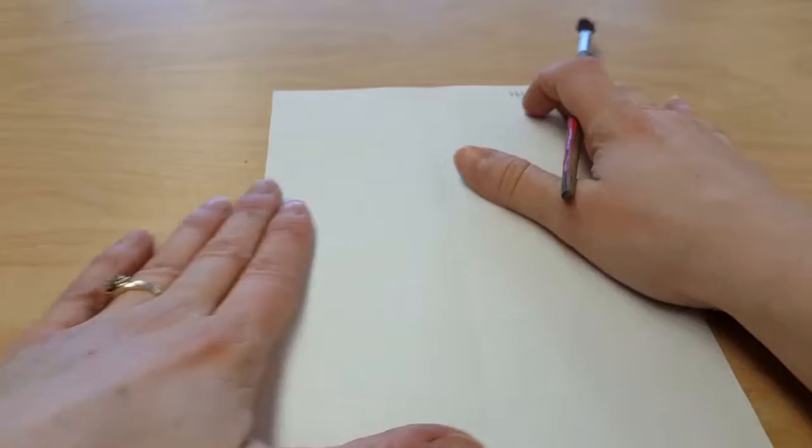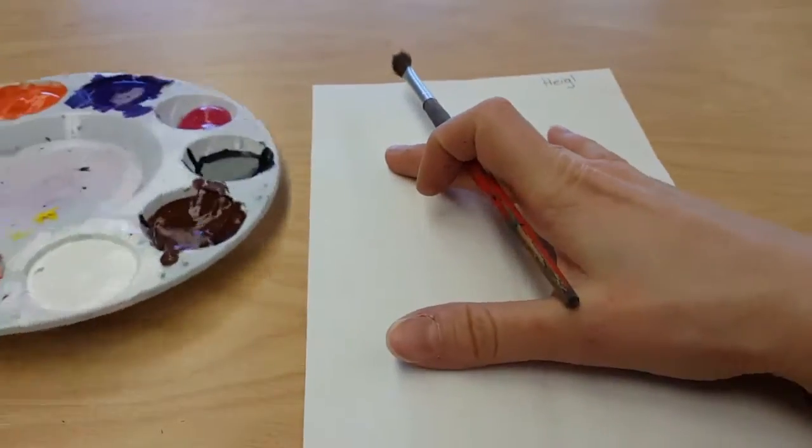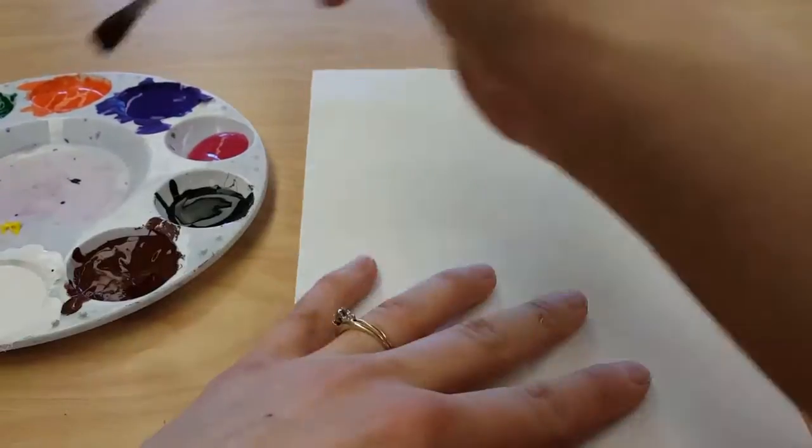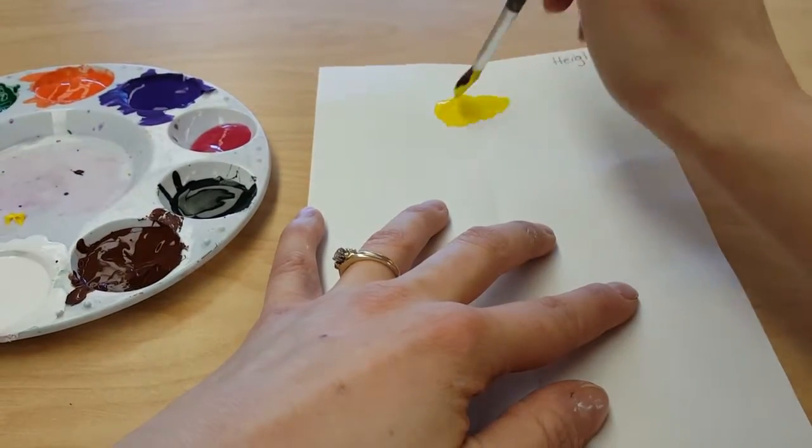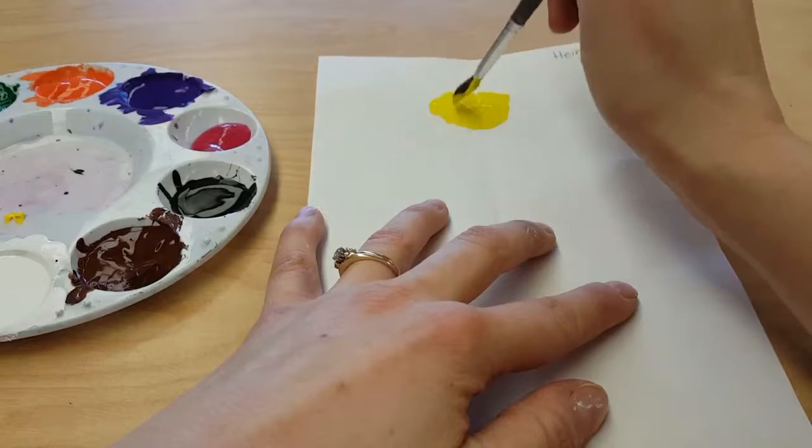I'm going to take a brush, pick a color—any color that you like—and on this middle line, paint yourself a little blob just on the middle line.